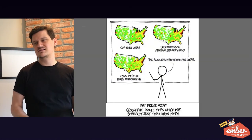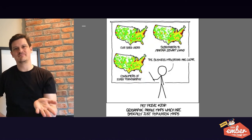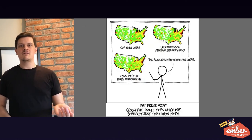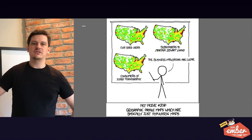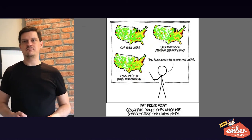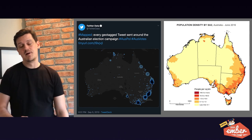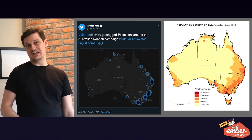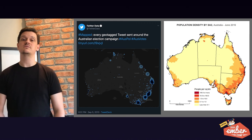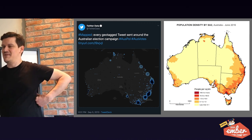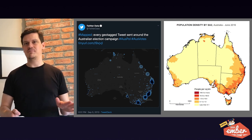My biggest pet peeve is that spatial correlation doesn't mean there's actually a real relationship between things. Most of it's just a function of population. We can see in this Twitter data from 2013 — there was a lot of excitement about web mapping, a lot of mapping going on. But you'll see that these are largely just functions of population density. On the left is tweets during the election; on the right is population density.